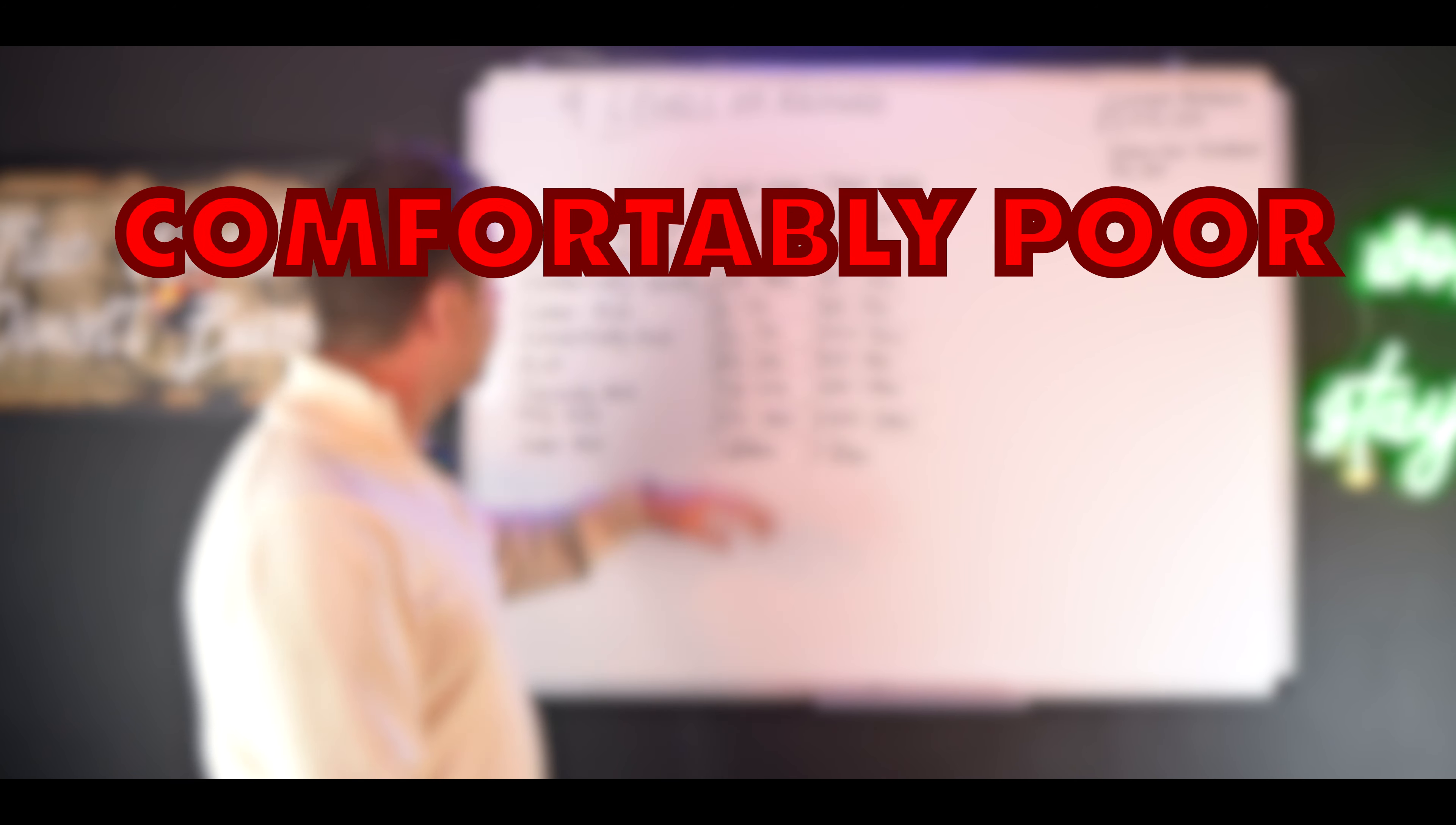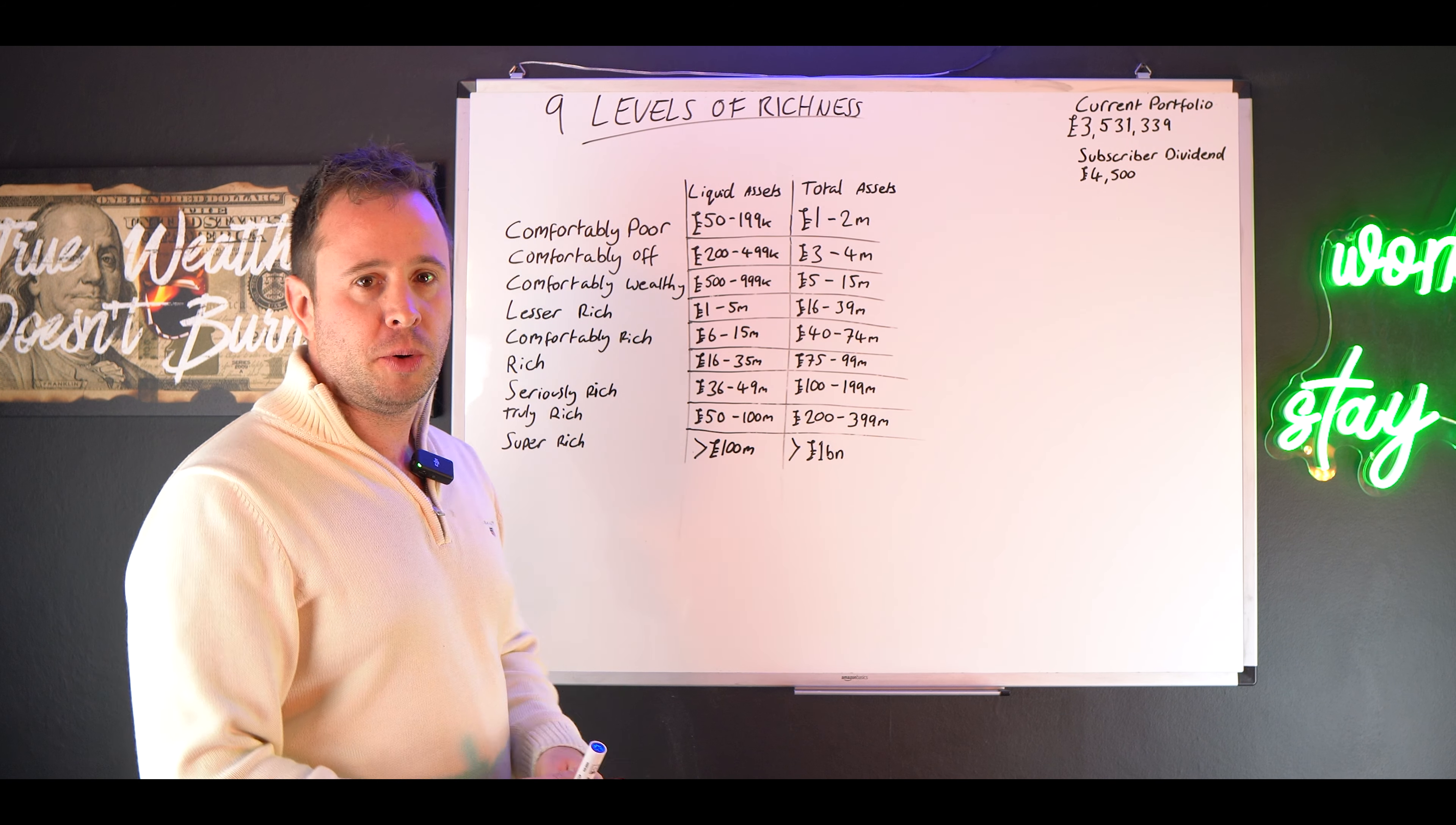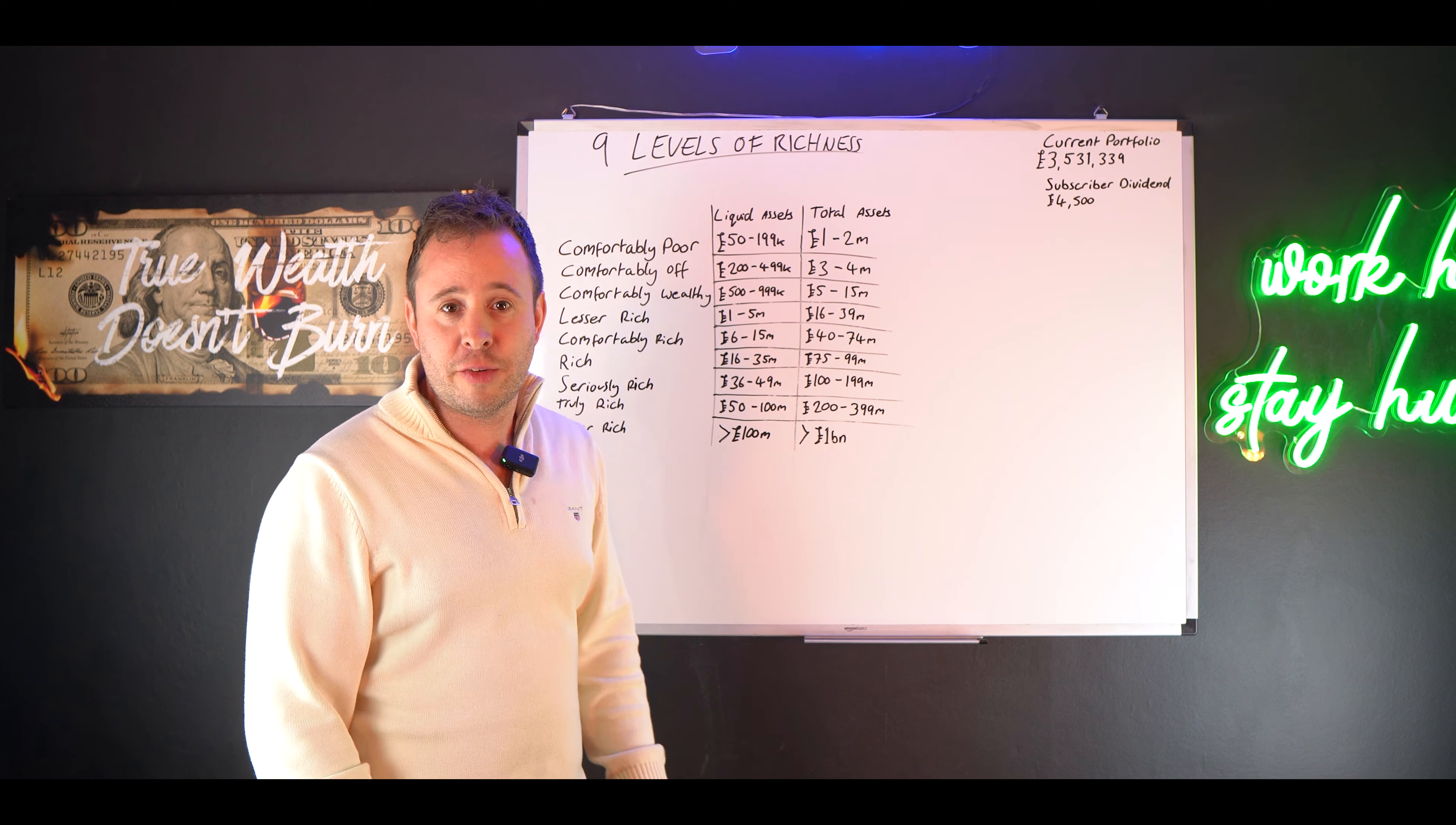So number one, comfortably poor. This is liquid assets of £50,000 to £200,000 and total assets or net worth of £1 to £2 million. It might seem bizarre that somebody can have a net worth of £1 to £2 million and still be defined as poor. But when you start to think about it, what is comfortably poor? You're not able to go out and buy whatever you want whenever you want, which you probably can't if you've only got £50,000 in liquid and £1 to £2 million of net assets.